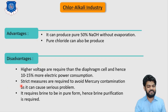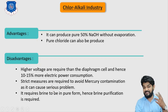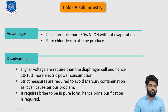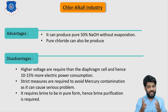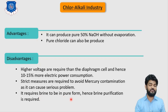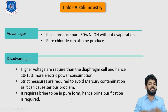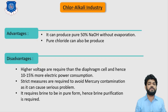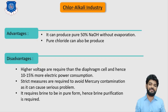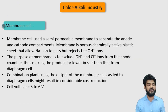Further disadvantages include that strict measures are required to avoid mercury contamination, as products can be easily contaminated with mercury. It also requires the brine to be in a very pure and highly concentrated form before it can be used in this cell, adding to the overall process cost.